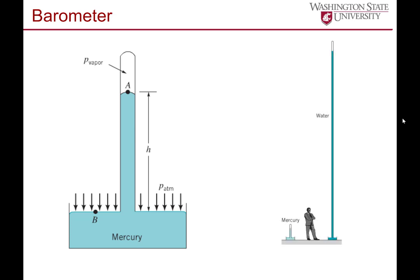The reason we use mercury instead of water is the specific weight. Mercury has a specific gravity of 13.6 compared to water at 1, so it's 13.6 times more dense. This makes it easy to create a pressure device on the scale of human interaction, as opposed to water which would need to be much higher.